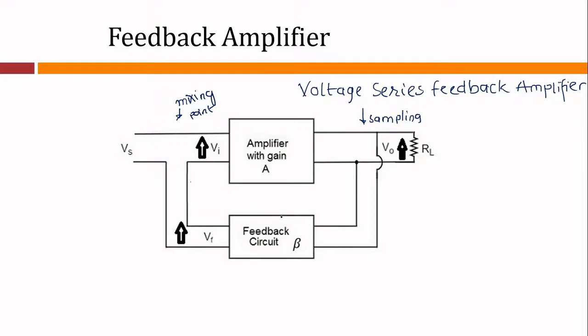When any increase in the output signal results in a change in the input such as to cause a decrease in the output signal, the amplifier is said to have negative feedback. The advantages of providing negative feedback are that the transfer gain of the amplifier with feedback can be stabilized against variations in the hybrid parameters of the transistor or other active devices. The most important advantage is that by proper use of this, there is significant improvement in the frequency response.